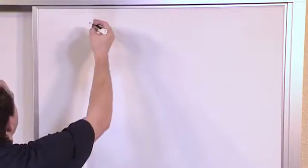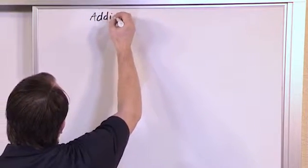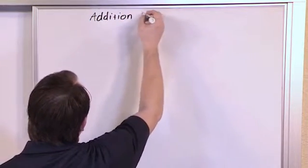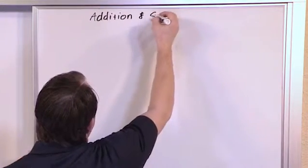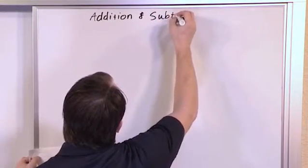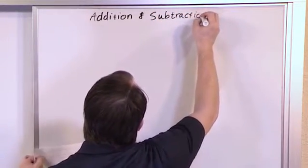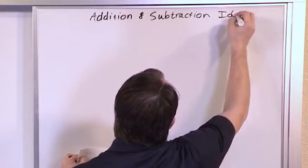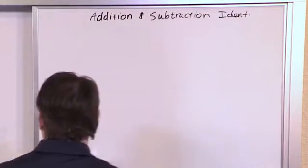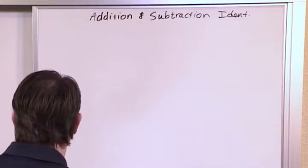All right, so these are called the addition and subtraction identities. Addition and subtraction identities. Okay, so there's several of them, and I'm just going to kind of go through them here.